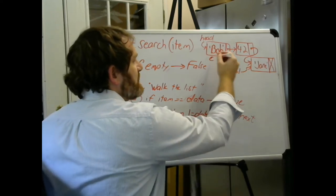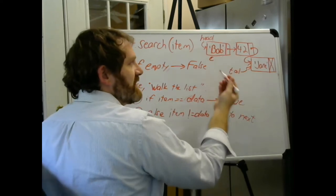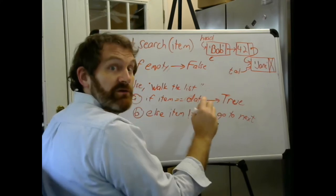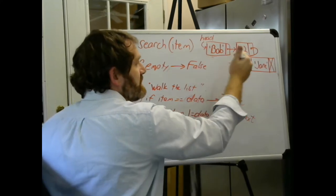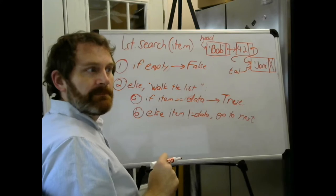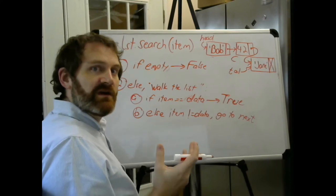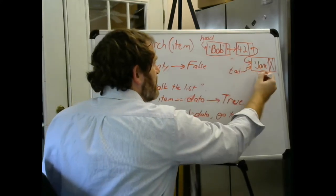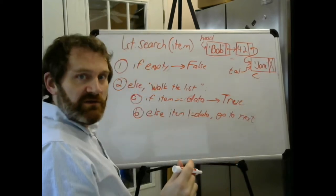Else, item is not equal to data. Go to the next node. Walk our list. So effectively what you're doing is you're kind of starting here, and we're going to have a little variable that's going to do this walking. And he's going to start here, and then are you it? Yes, no. You're not? Okay, move him down here. Are you it? Yes, no. You're not? Okay, move you down here. Are you it? Yes, I am. Return true.